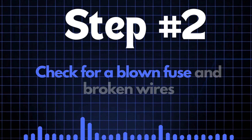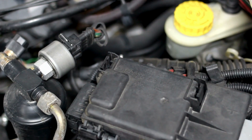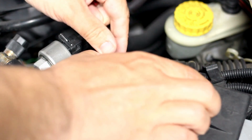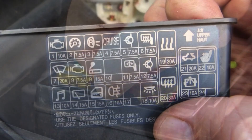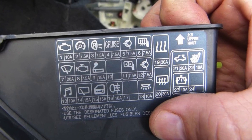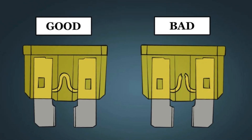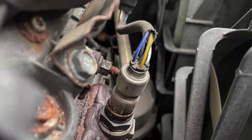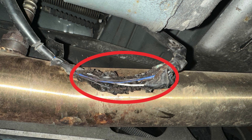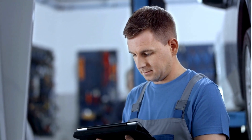Step 2: Check for a blown fuse and broken wires. First, locate your car's fuse box and find the specific fuse that controls the oxygen sensor heater circuit. Check the diagram on the back of the fuse box cover to identify the correct fuse. Once you've found it, inspect it closely — if the fuse link is broken, it'll need to be replaced. Next, check the wiring around the oxygen sensor for any broken or frayed wires. If you spot any damage, repair the wires and recheck to see if the P0043 code is cleared.